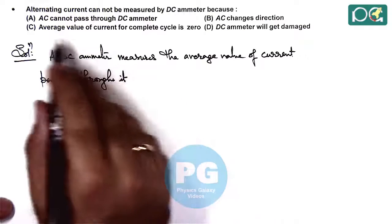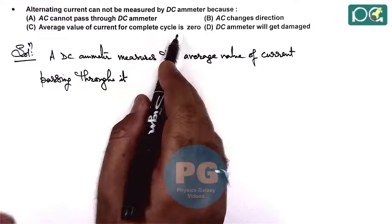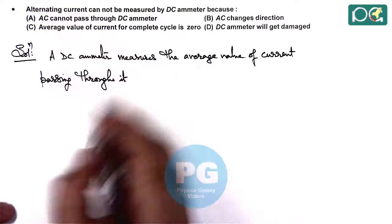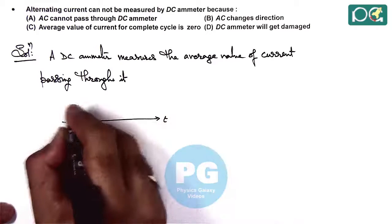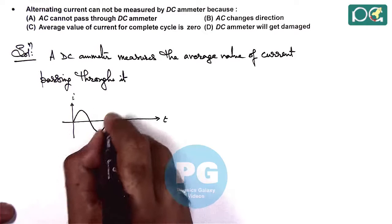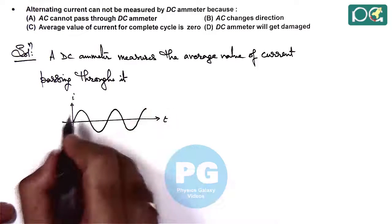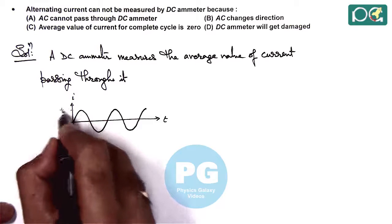And as in AC, the direction of current is continuously changing and we are considering it to be a sinusoidal AC of which the average value is zero. So here we talk about the value of current which varies on the two sides of time axis periodically between minus I-not and plus I-not.